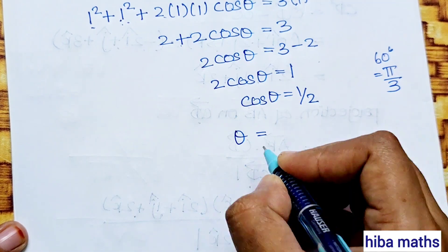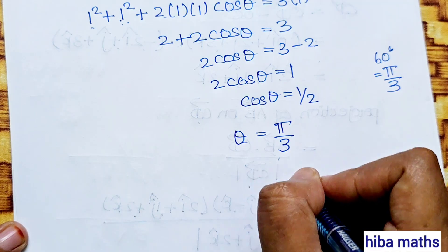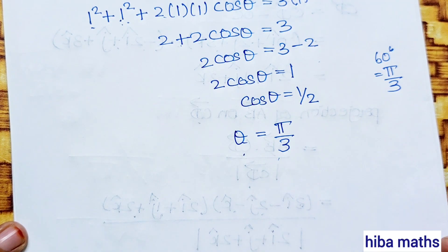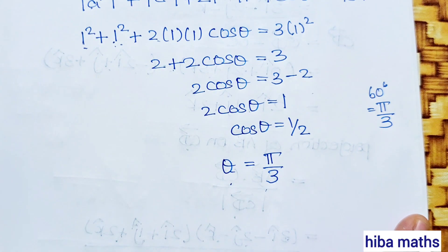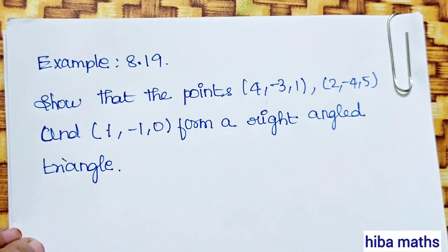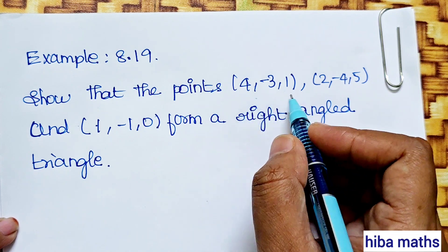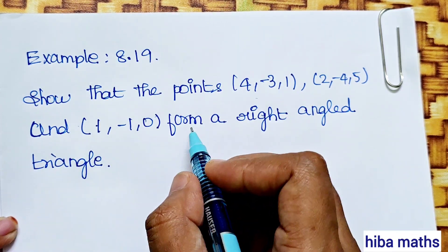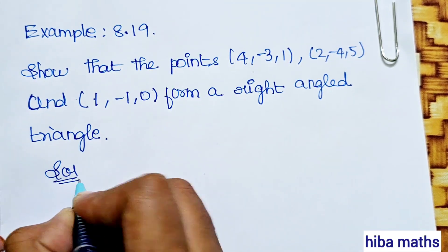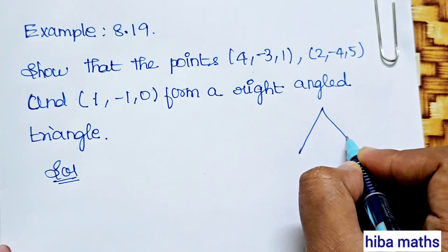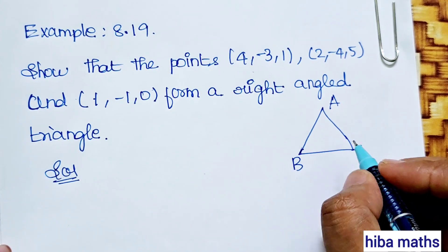Now for Example 8.19: Show that the given points form a right-angled triangle. We are given 3 points and need to prove they form a right-angled triangle. We will prove this by showing two of the side vectors are perpendicular.